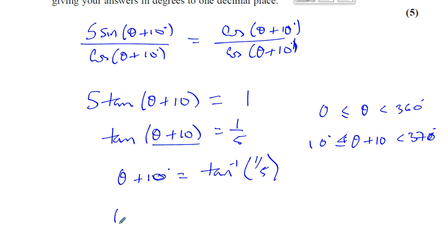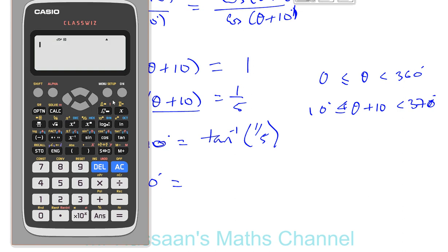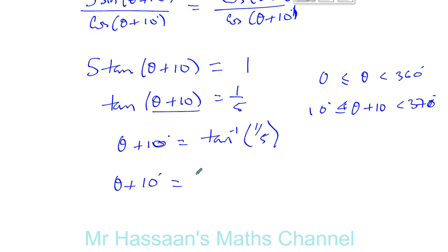Now let's find what the inverse tan of 1 fifth is. We take our calculator and make sure that it's in degree mode. We press inverse tan and put 1 fifth in there. And it gives us 11.3099, 11.3099 degrees.